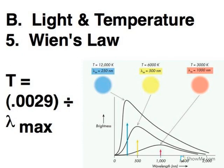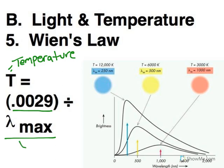And our equation for Wien's Law is that T, which is our temperature, is equal to this constant, 0.0029, divided by what we're calling lambda max. And what lambda max refers to is basically the wavelength that is brightest.